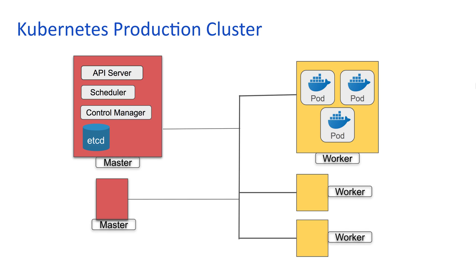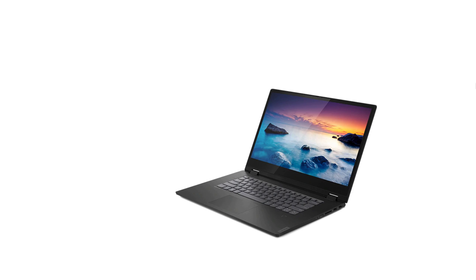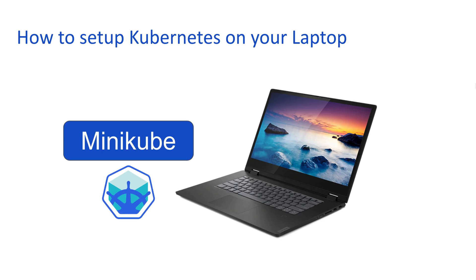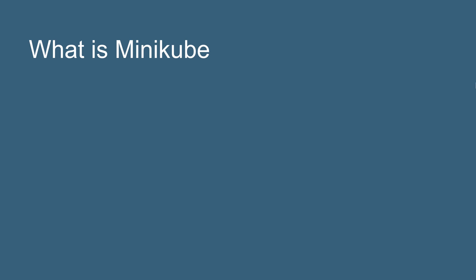When we talk about production, every node — master or worker — is a separate virtual machine or a physical machine, so we need a big infrastructure. In production, we can have all this infrastructure and resources. However, if we need to install, set up and use Kubernetes on our laptops or our systems, what are the options? We have limited resources here. We cannot have a huge infrastructure like in a production environment. So the answer is we can use Minikube.